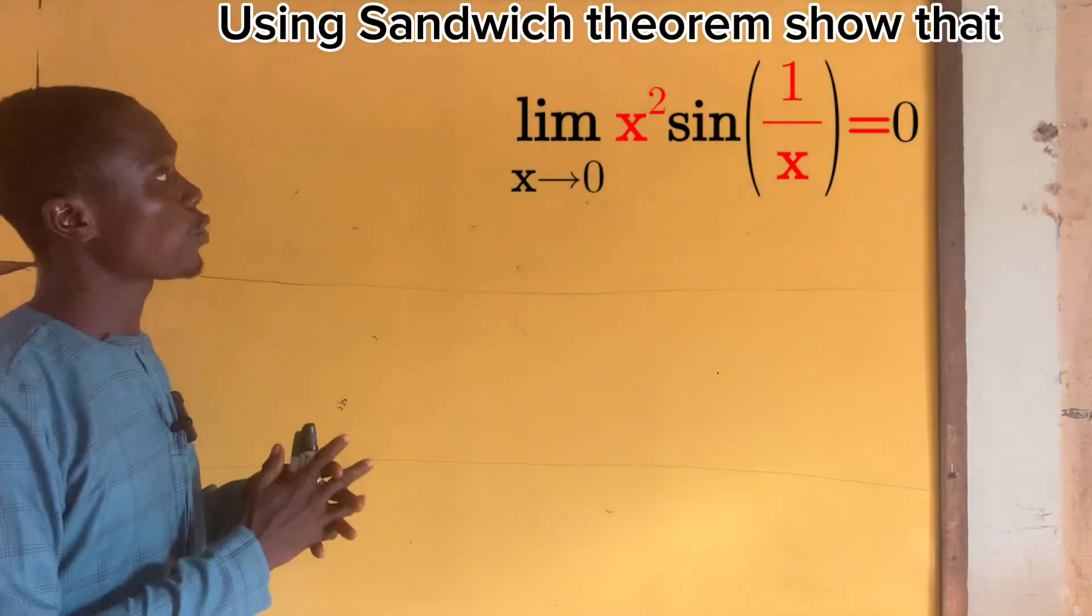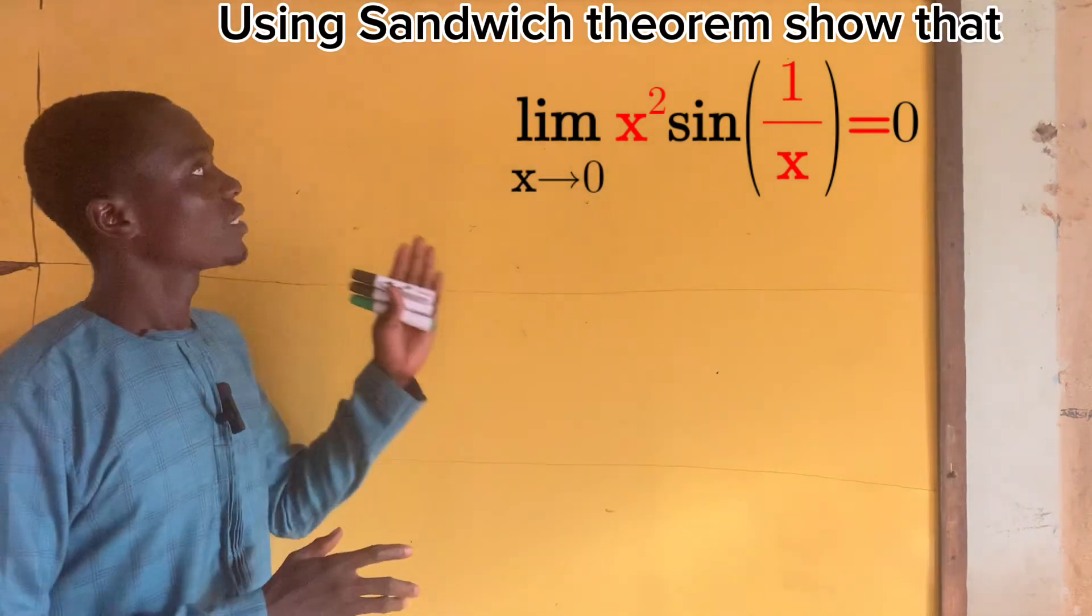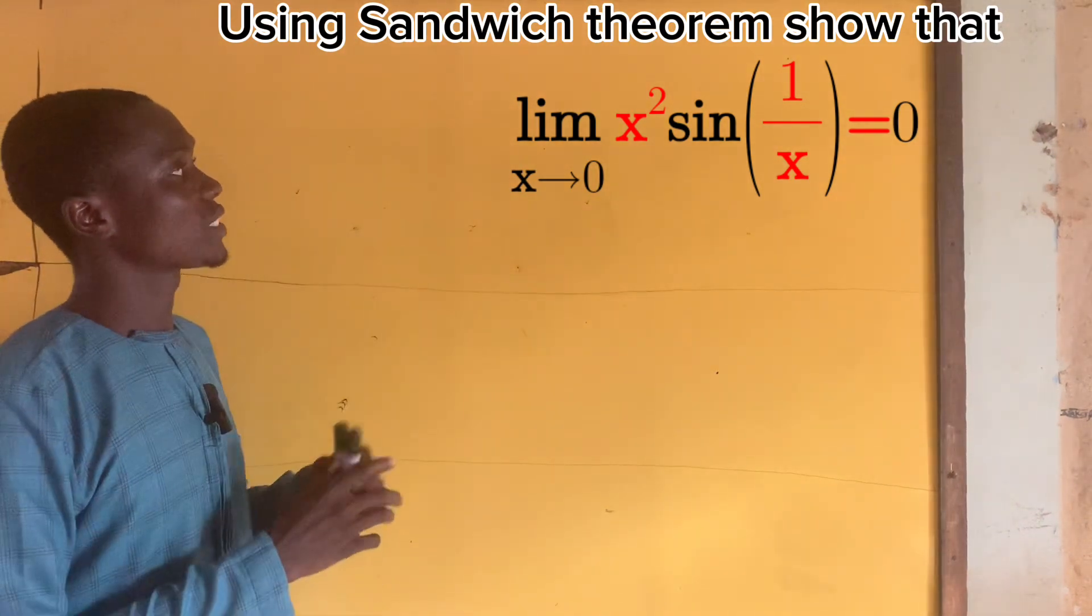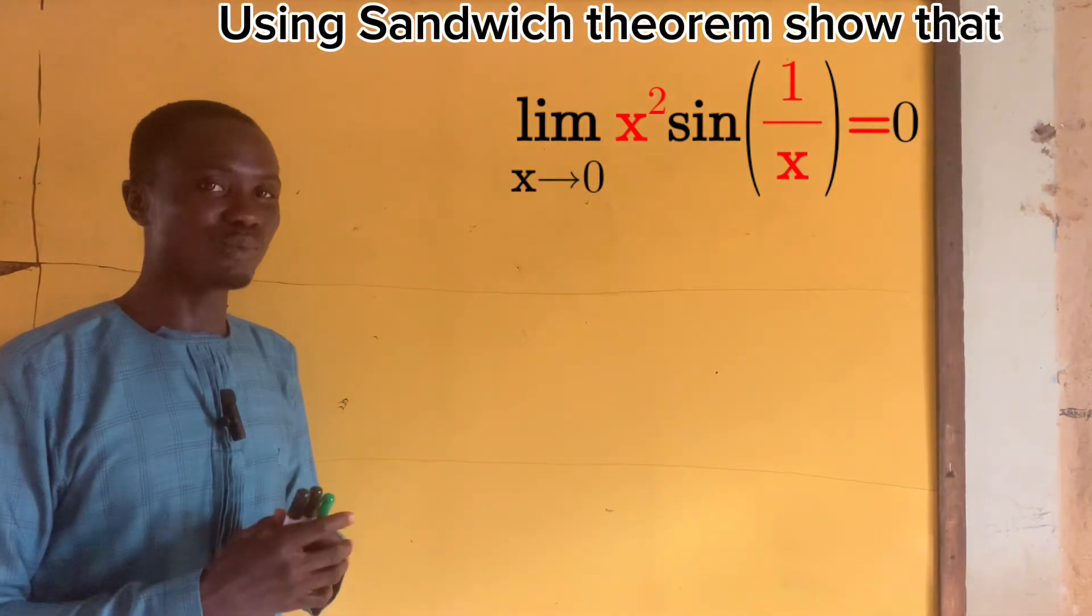Using the sandwich theorem, we are to show that the limit as x approaches 0 of x² times sin(1/x) equals 0. So how do we do this in a very simple way?